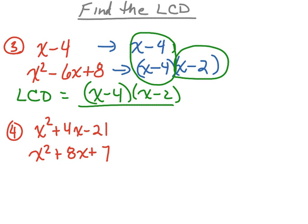Example number 4. We're going to assume that x squared plus 4x minus 21 is one of the denominators and x squared plus 8x plus 7 is the other denominator. Factoring x squared plus 4x minus 21 — leading coefficient of 1, so x times x gives the x squared. I need factors of negative 21 that add up to positive 4. Those numbers are 7 and negative 3. Notice 7 times negative 3 gives negative 21, and 7 plus negative 3 adds up to positive 4. So these are the factors of x squared plus 4x minus 21.